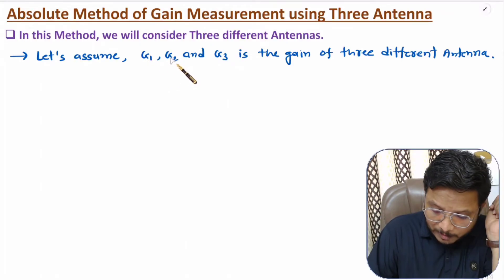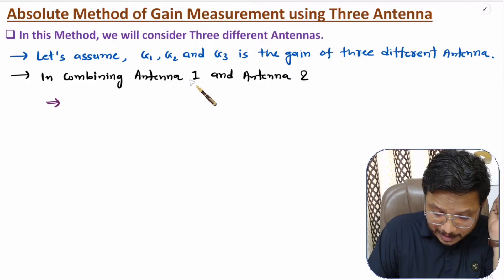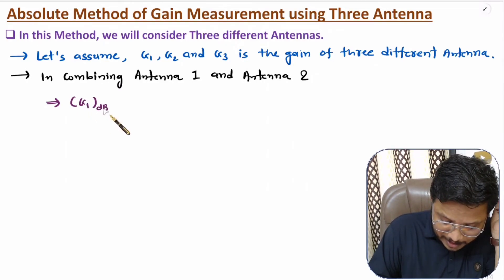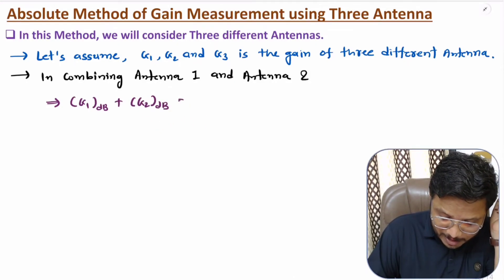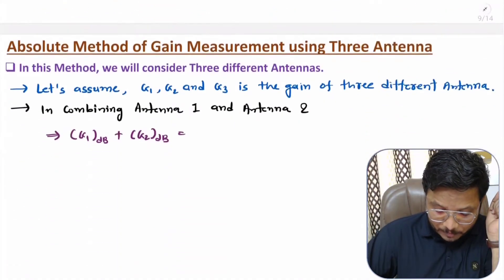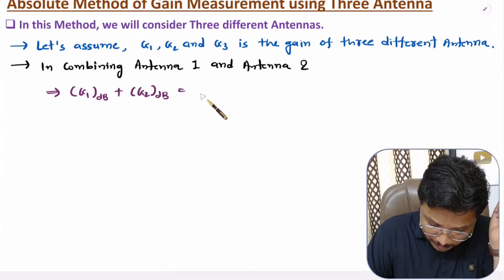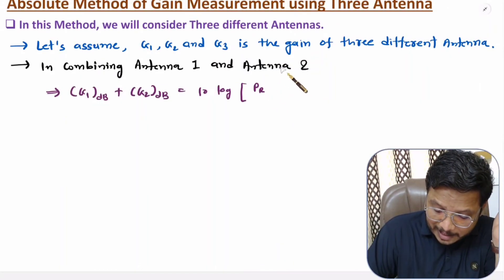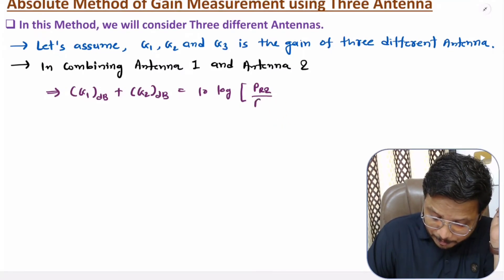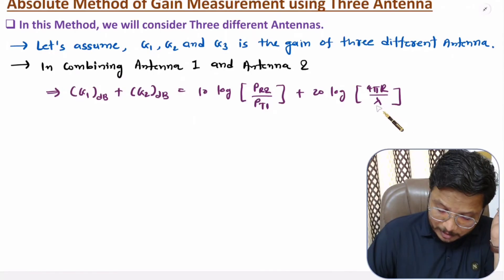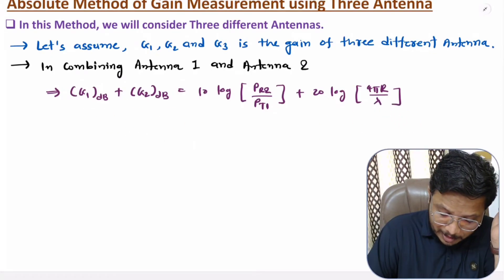For the first combination, antenna 1 is the transmitter and antenna 2 is the receiver. The Friis equation gives: G1(dB) + G2(dB) = 10 log(Pr2/Pt1) + 20 log(4πR/lambda), where Pr2 is the power received at antenna 2 and Pt1 is the transmitted power from antenna 1. This is equation one.